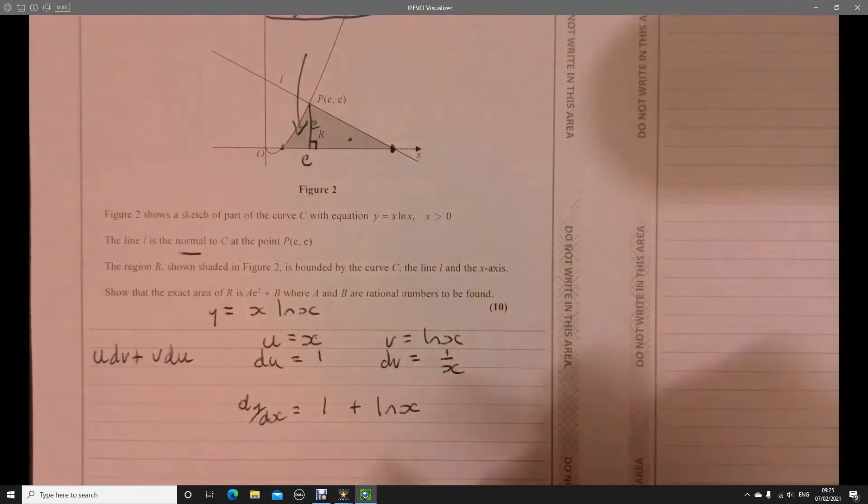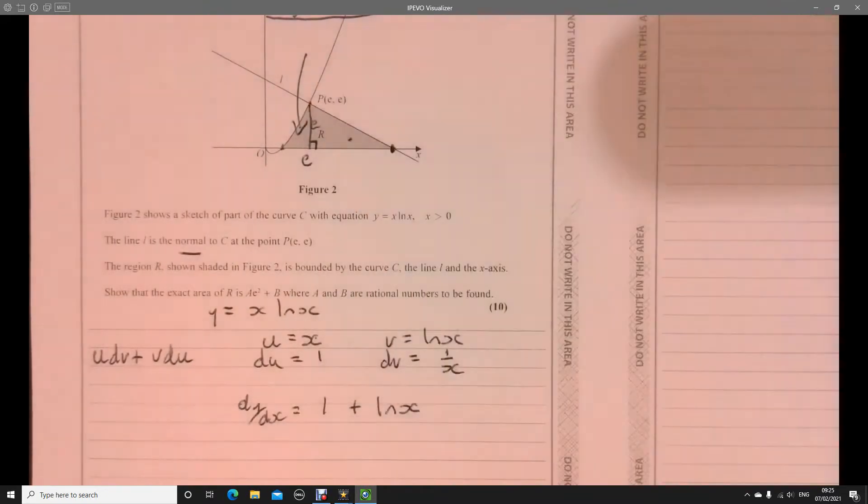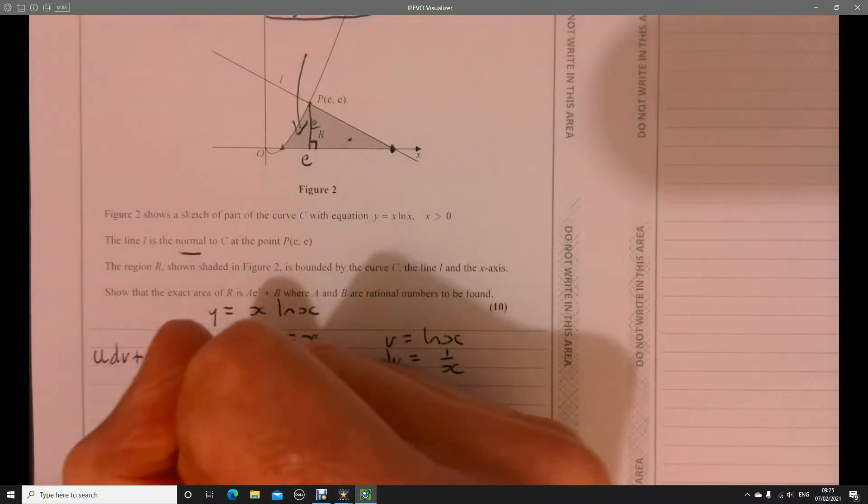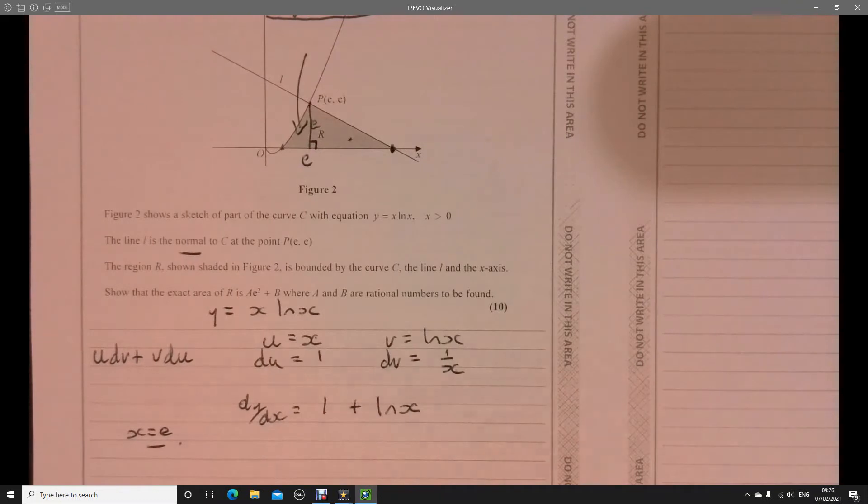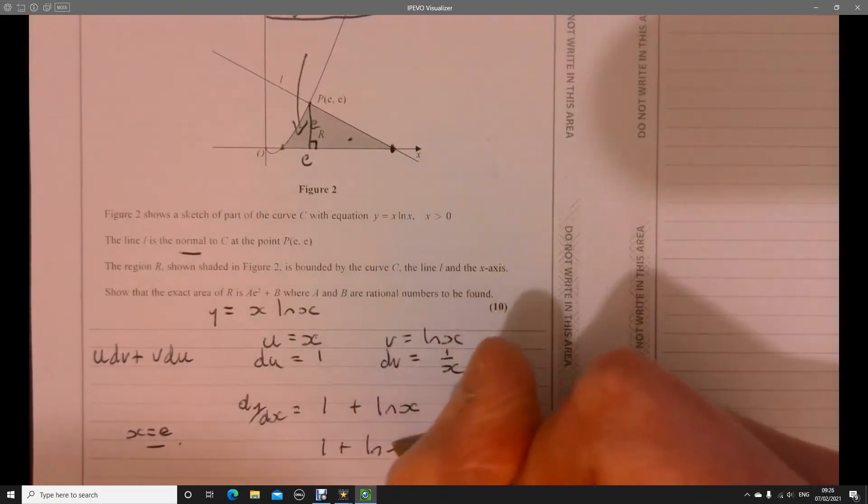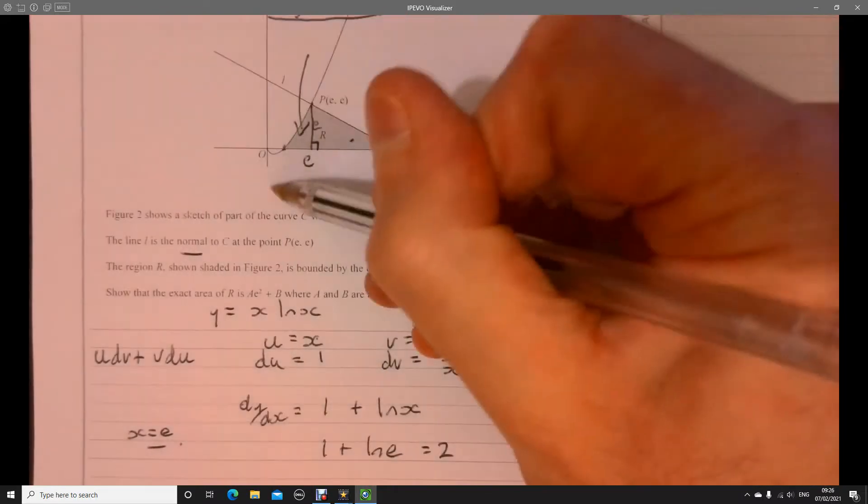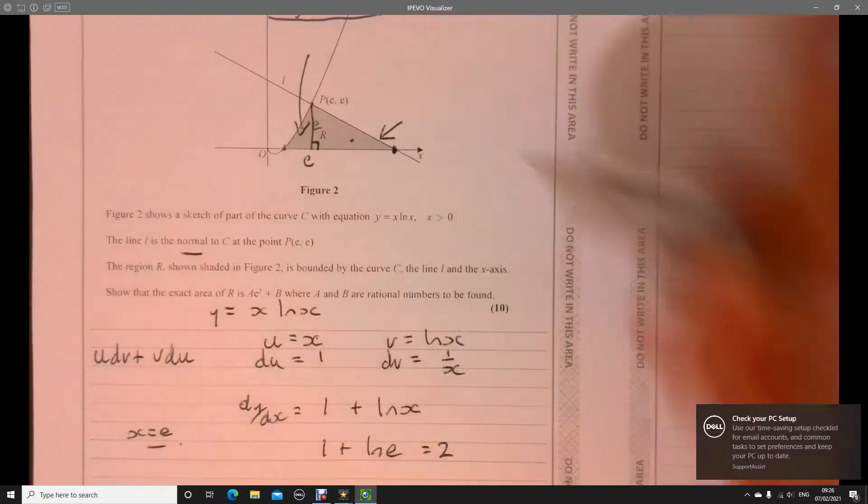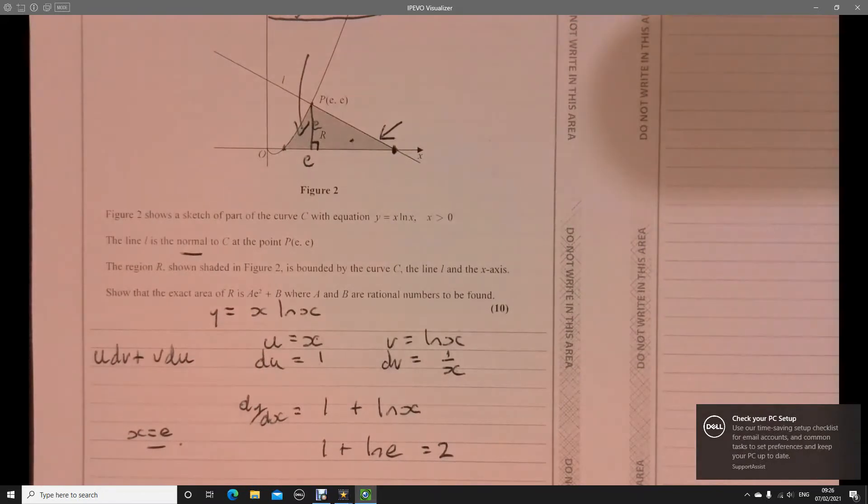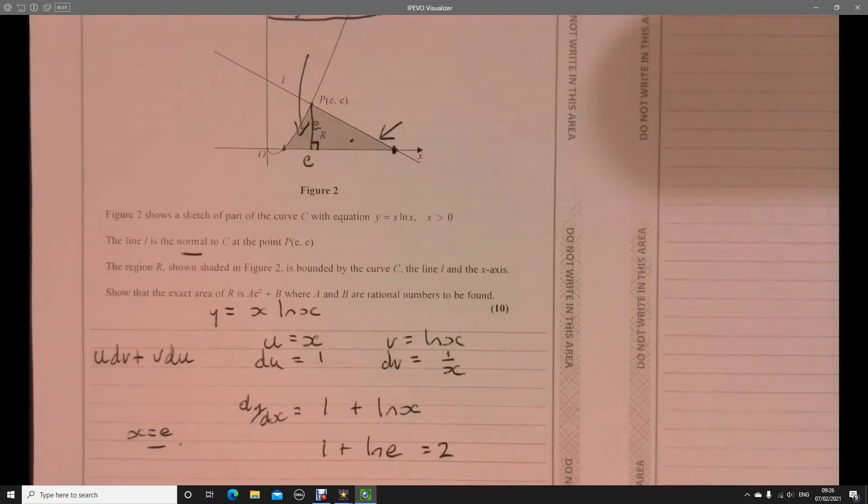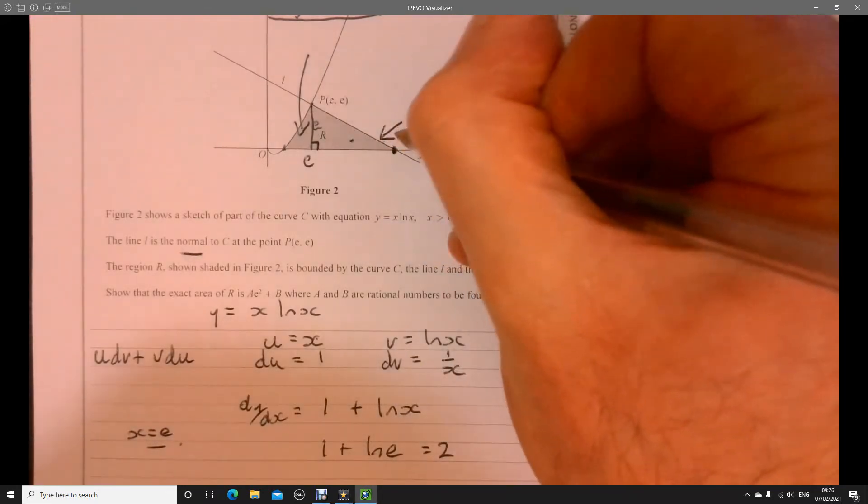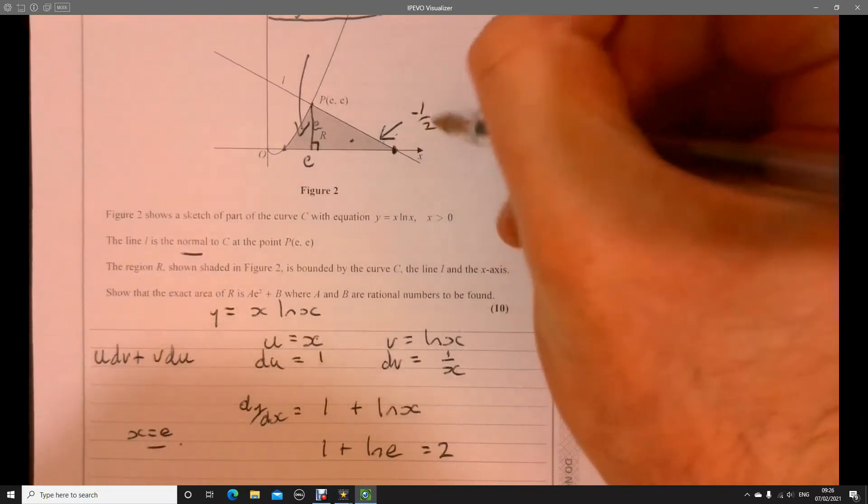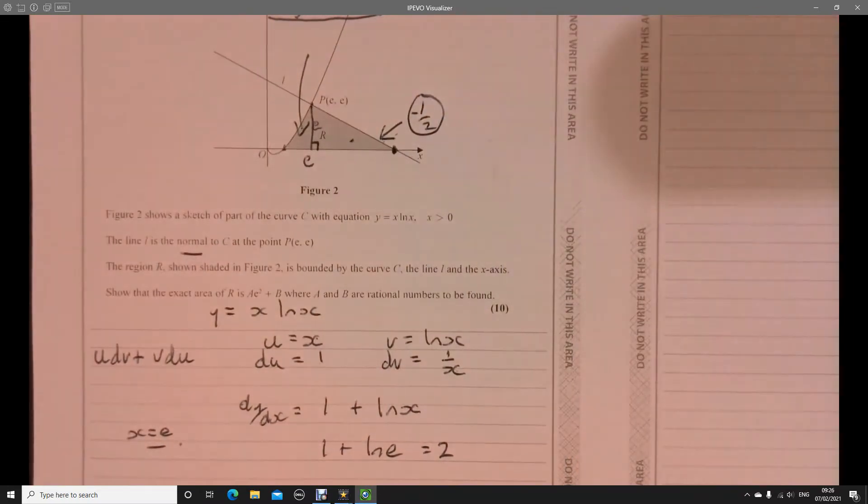OK, so what's the gradient when x is equal to E? So I want to sub in x equals E. So 1 plus ln E. Well, that equals 2. So the gradient of the tangent is 2. So the gradient here has to be minus a half. So that's got to be our gradient.